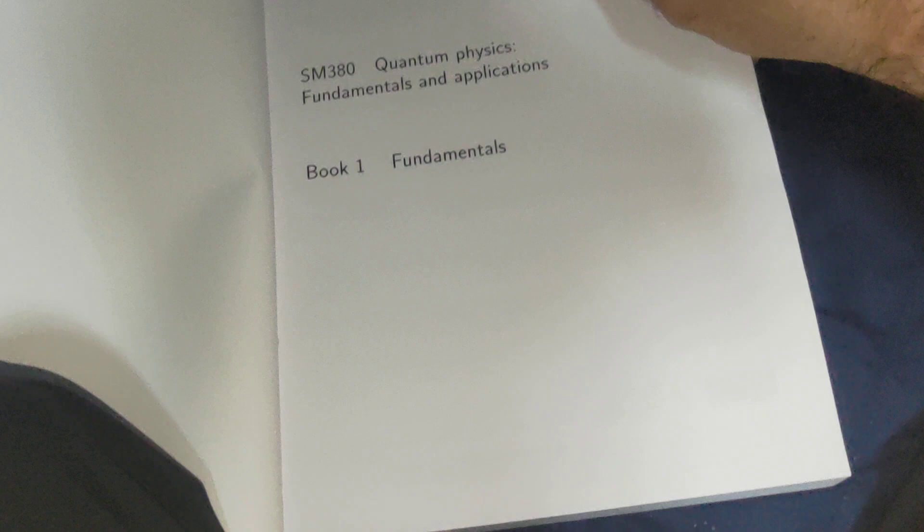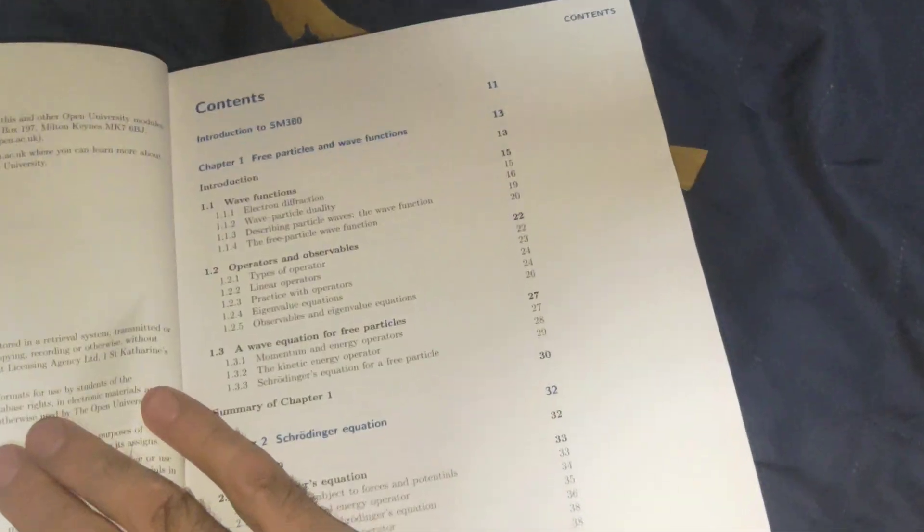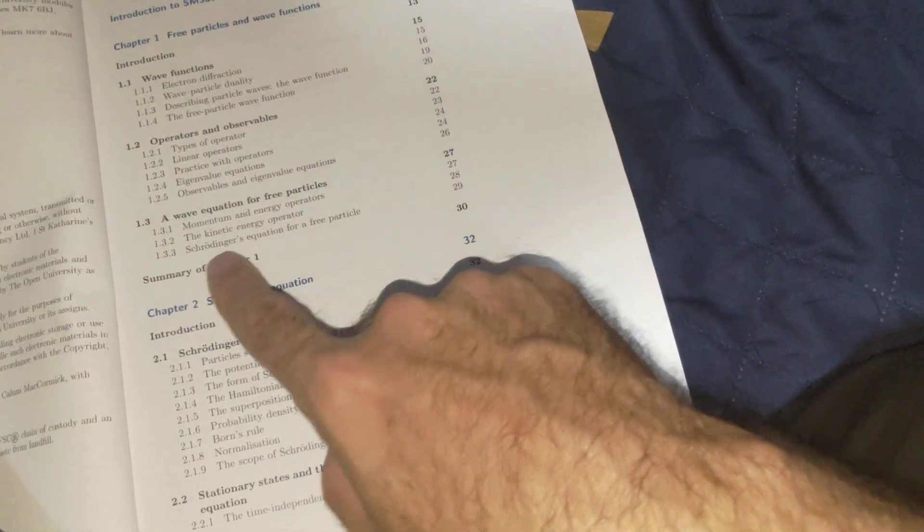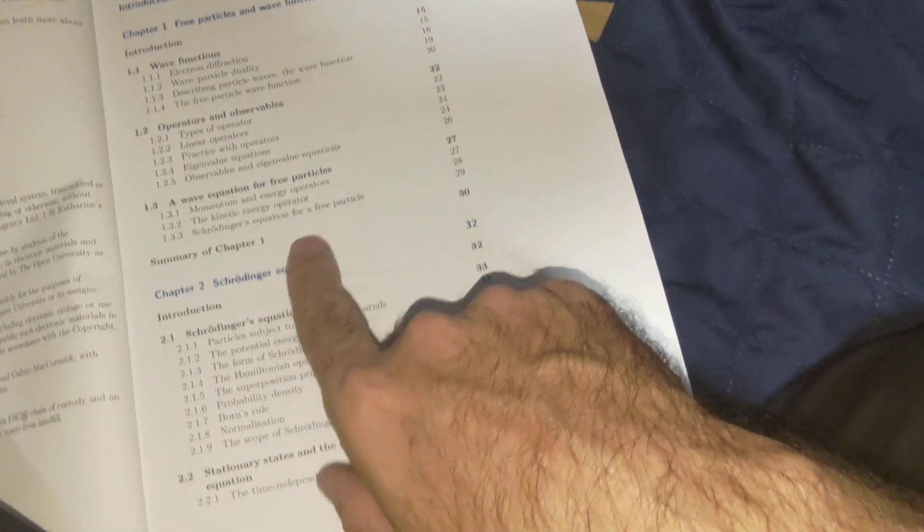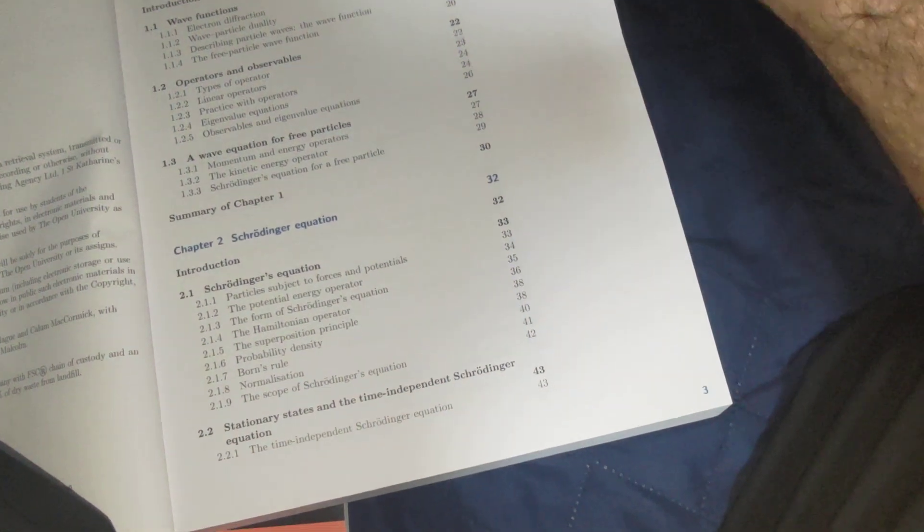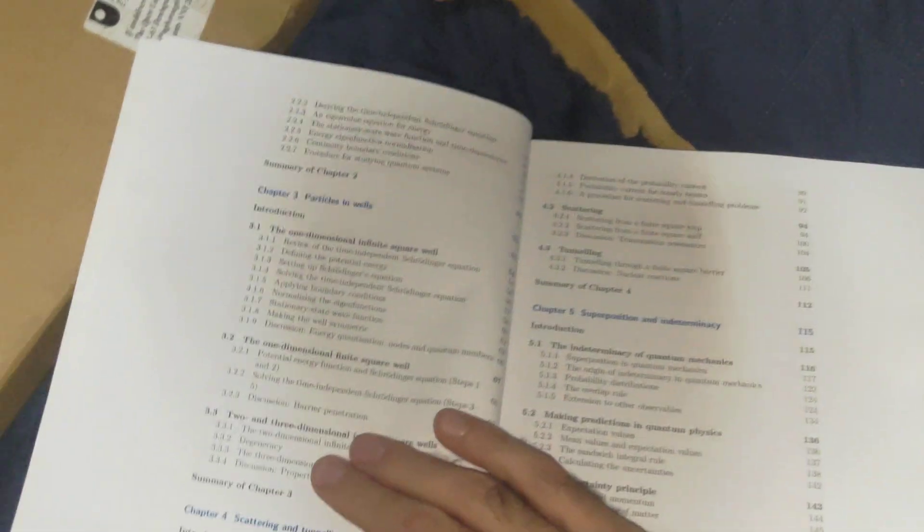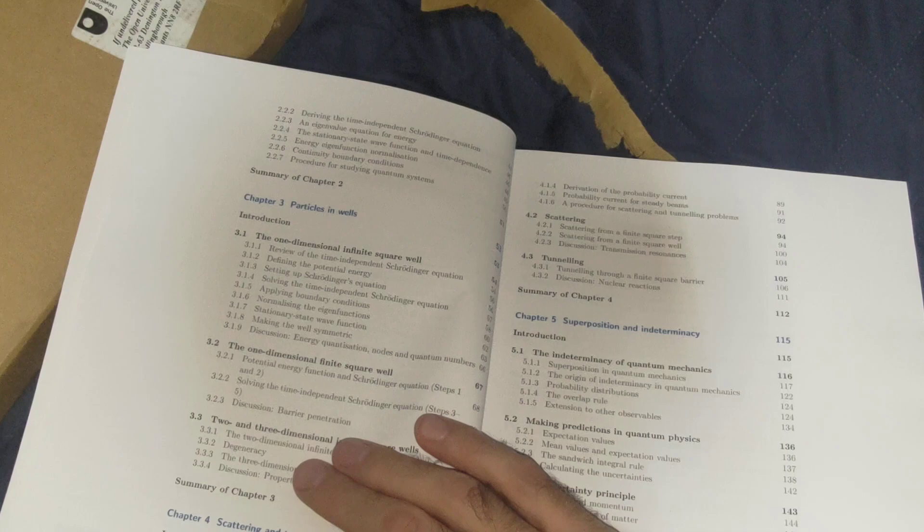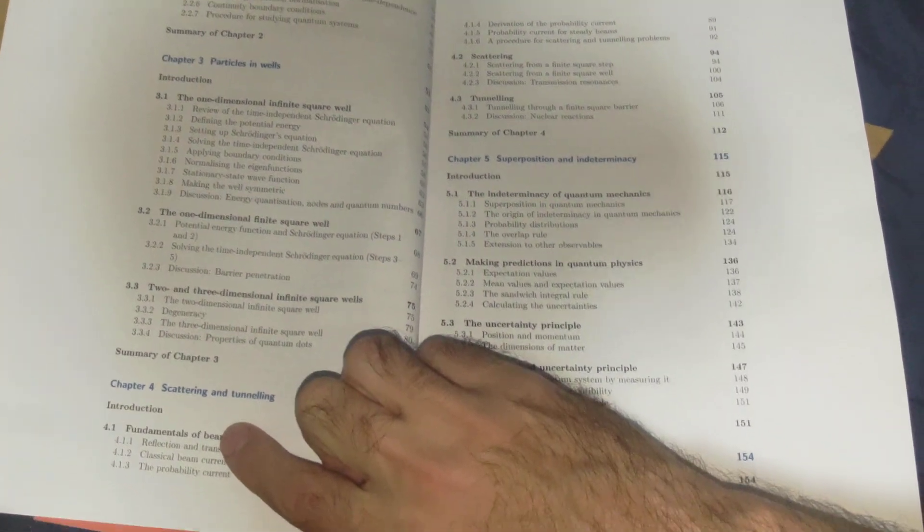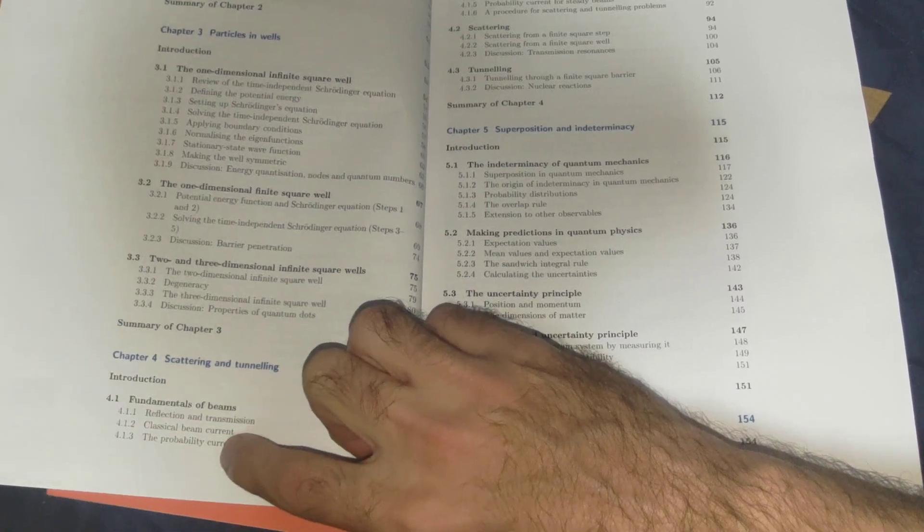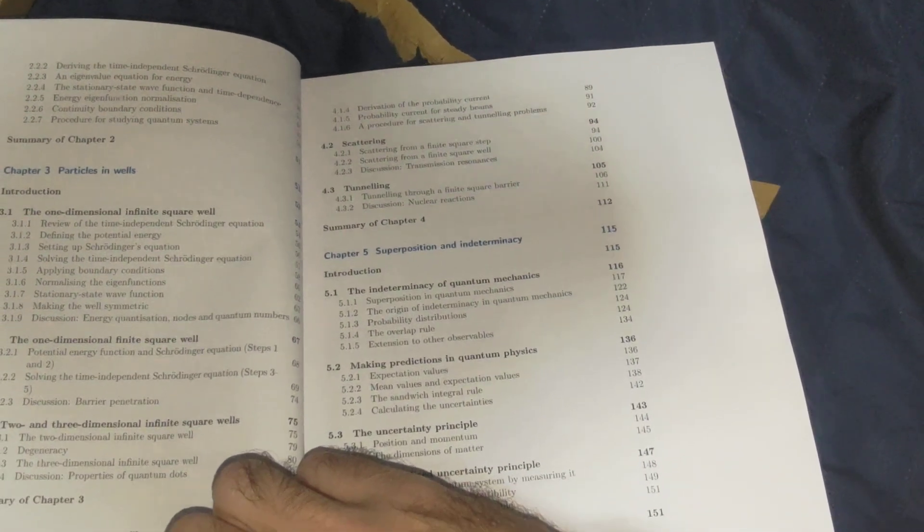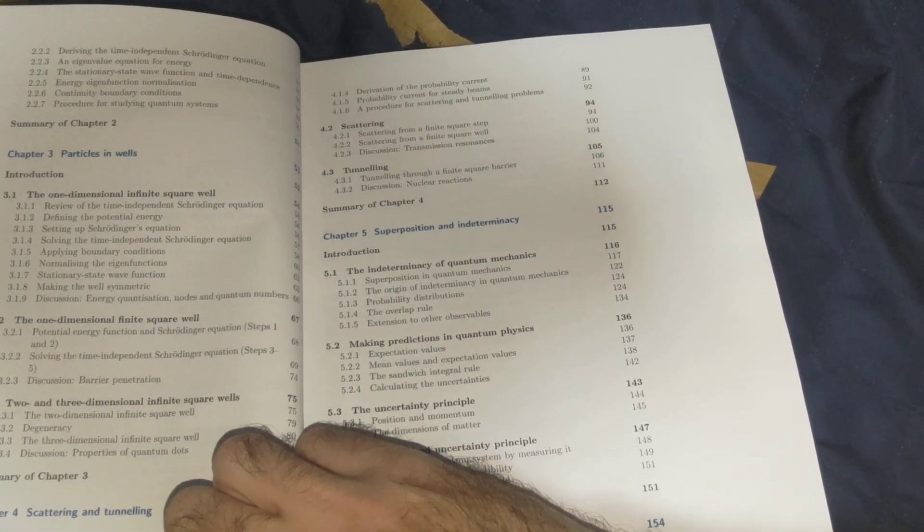Let's try and open this up and hold it with my knee over here. So we have wave functions, operators and observables, wave equation for free particles, Schrodinger's equation, stationary states and time independent Schrodinger equation, one-dimensional infinite square well, one-dimensional finite square well, two and three-dimensional infinite square well, fundamentals of beams, scattering, tunneling.